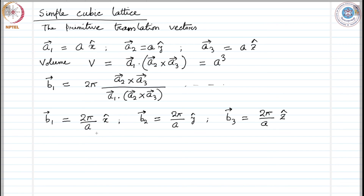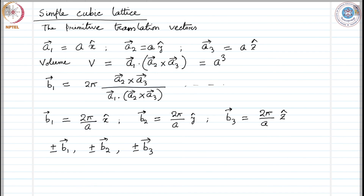The boundaries of the first Brillouin zone can be obtained by taking normals to the reciprocal lattice vectors. If we consider plus and minus b1, plus and minus b2, and plus and minus b3 — these six vectors — and bisect them by normal intersection using a plane, there are six planes that cut out a cube. That cube is the Brillouin zone for this system. So, the Brillouin zone for a simple cubic lattice is also a cube.